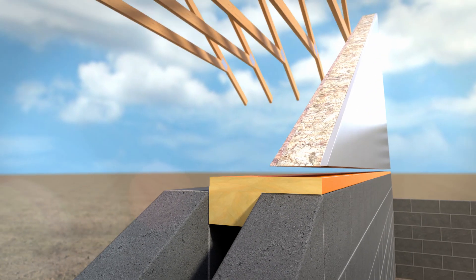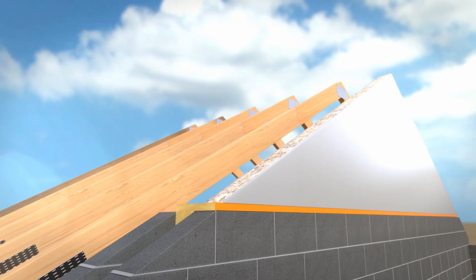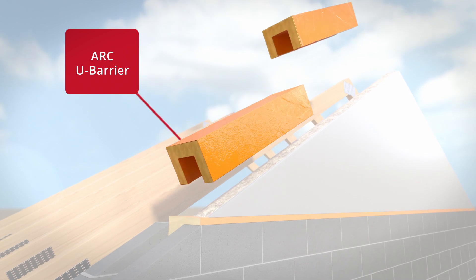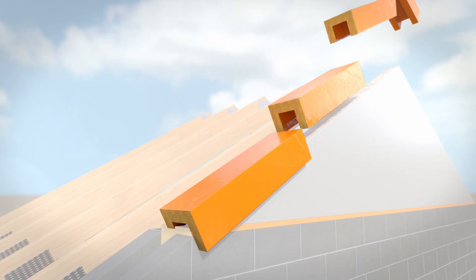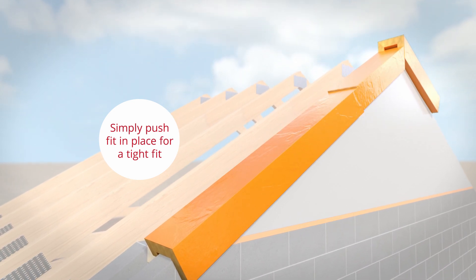The Arc U barrier provides fire stopping between the spandrel panel and roof covering. It is fitted on top of the spandrel panel, but can be fixed with nails if required.